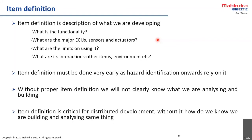Item definition plays a key role in distributed development. If you are a Tier 1 supplier, you may be developing HARA and safety goals, or they may be provided by the customer, and you will work on FSR/TSR level while outsourcing software safety requirements to Tier 2 suppliers. Without item definition, how do you know that all parties are analyzing and building the same thing?